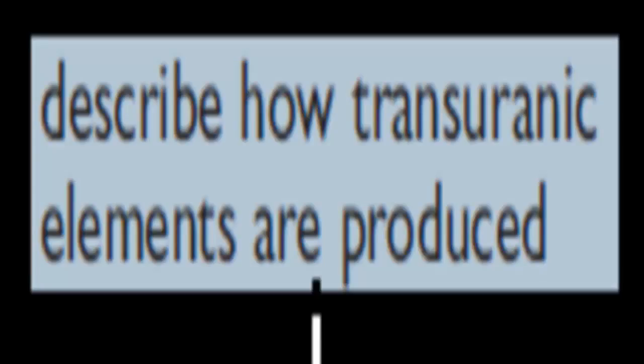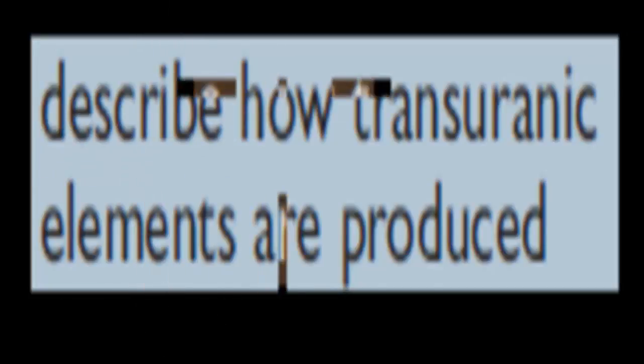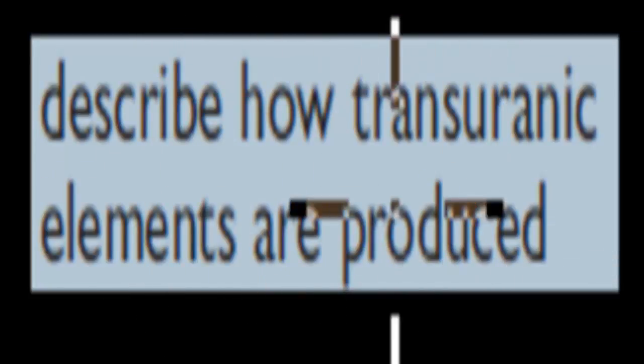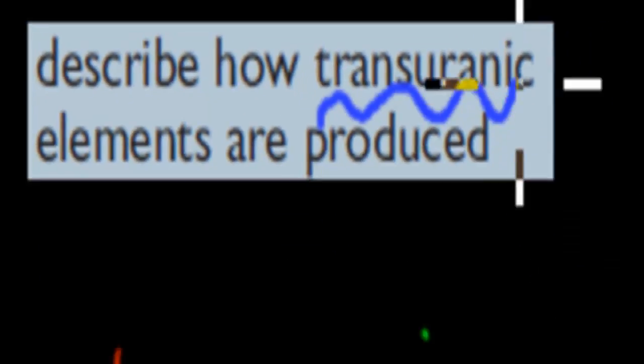Welcome back. In the last video, we talked about instruments that help us detect radiation, such as a Geiger counter and a cloud chamber. In this video, we're going to cover the next stop point, which says: describe how transuranic elements are produced. Before we start, I'm going to go over that word transuranic and what that actually means.